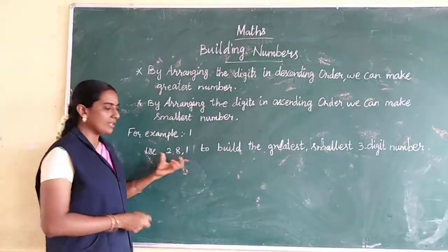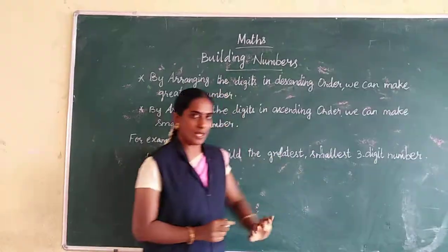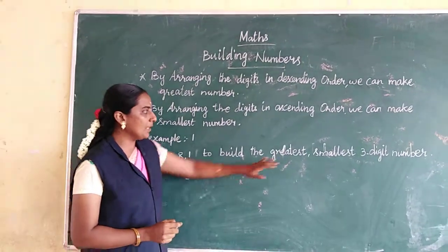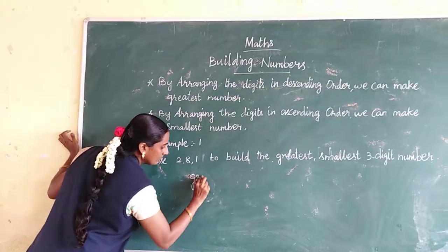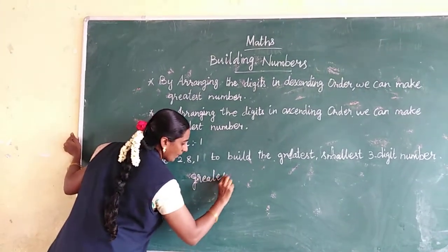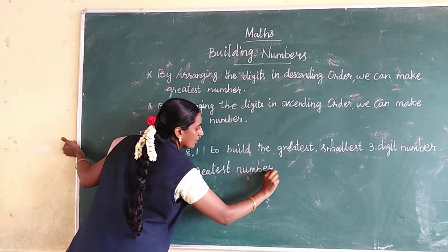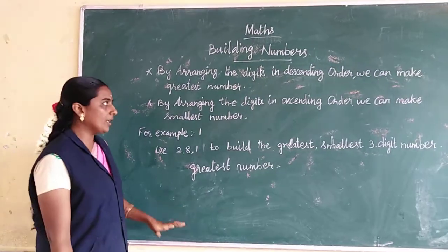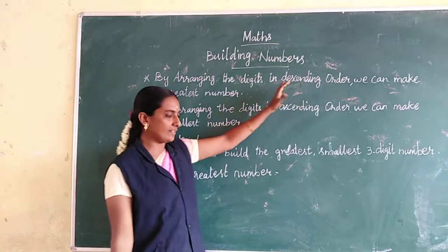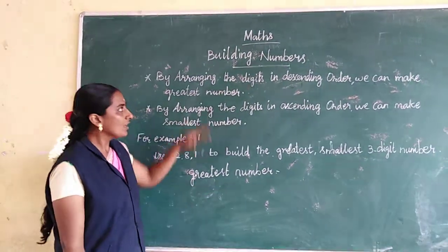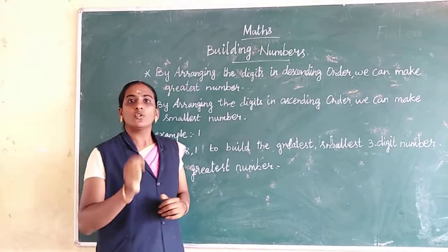Listen here — how many numbers? 3 numbers: 1, 2, 3. So it's a 3-digit number. Now, for the greatest number, we use descending order. Descending order means big number to small number.